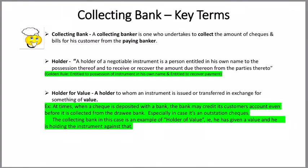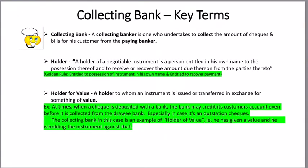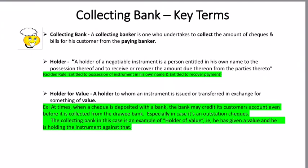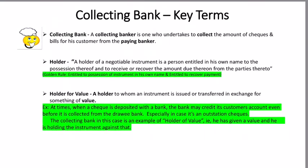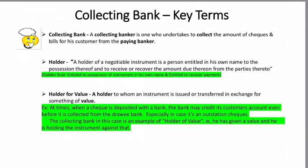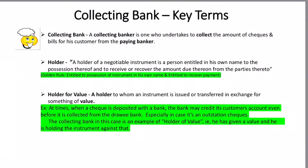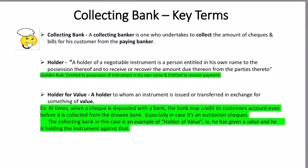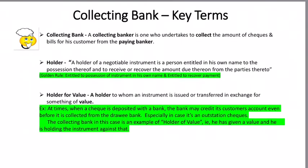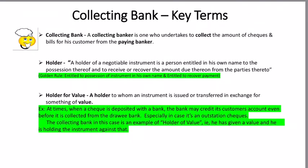Who is a holder? There are three terms related to holder: one is holder, holder for value, and then holder in due course. These are used very frequently in many of the legal definitions for banks and are generally used in the Negotiable Instruments Act. The golden rule to identify a holder is that a holder is a person who is entitled to the possession of the instrument in his own name, and also entitled to recover or receive payment using that instrument.